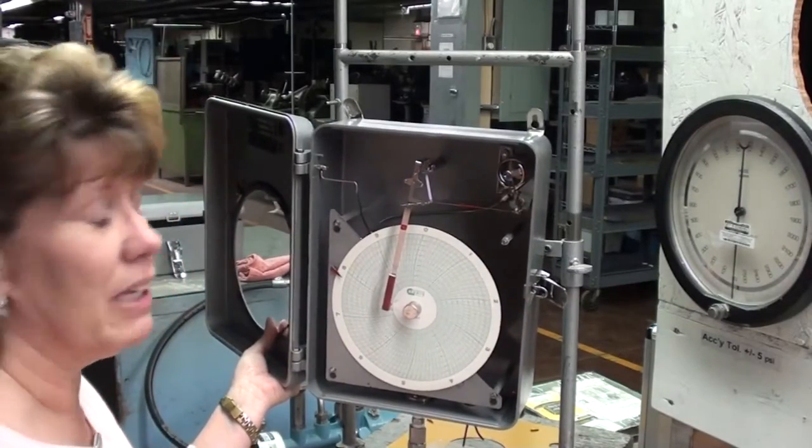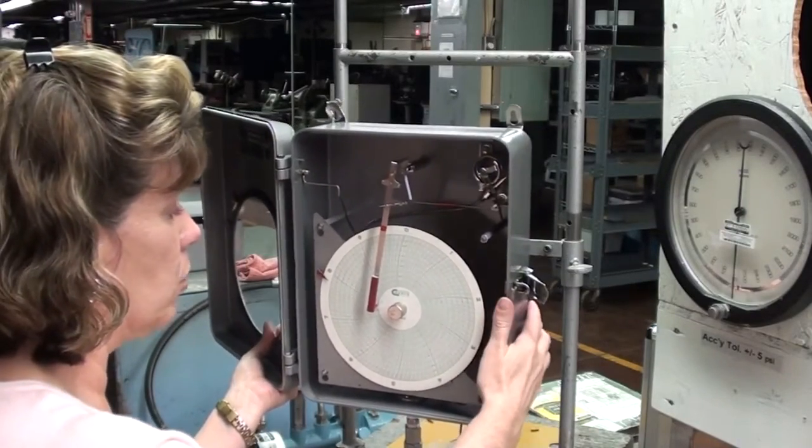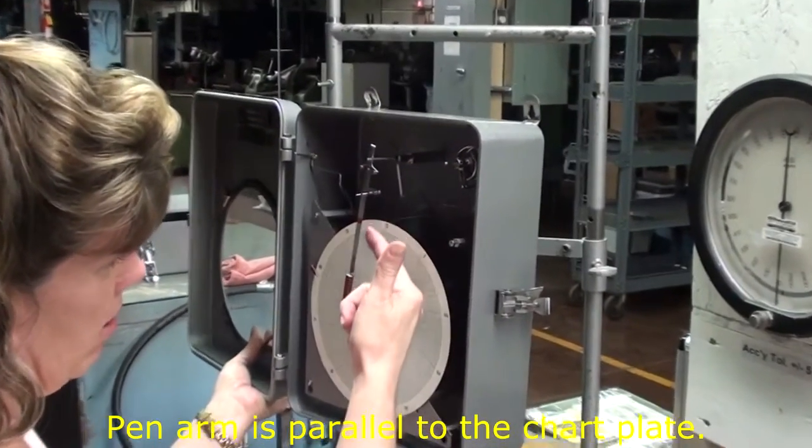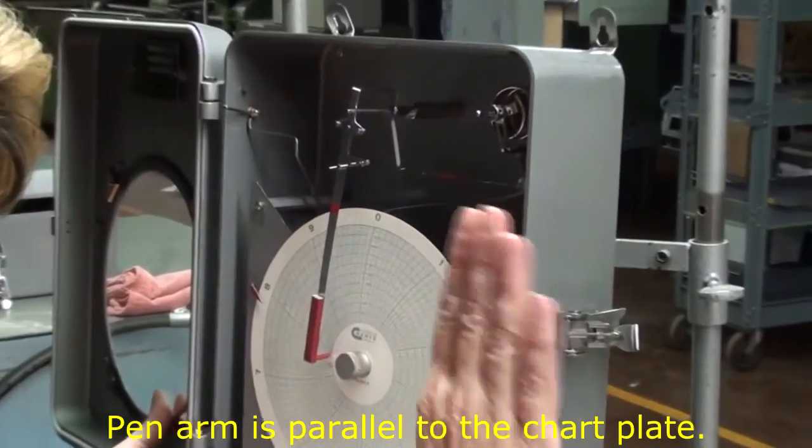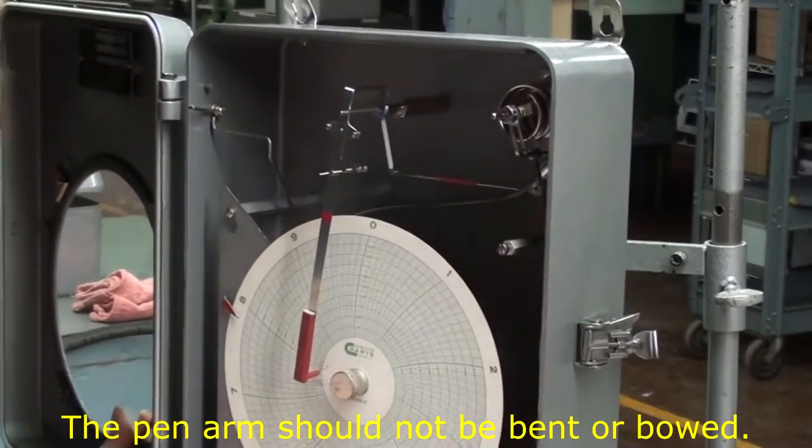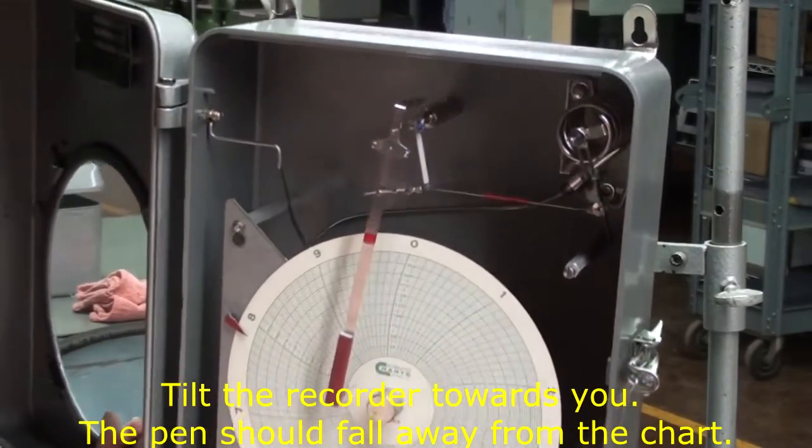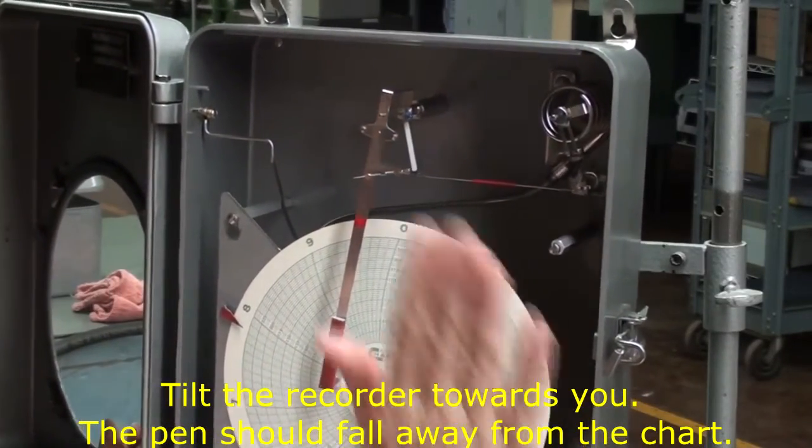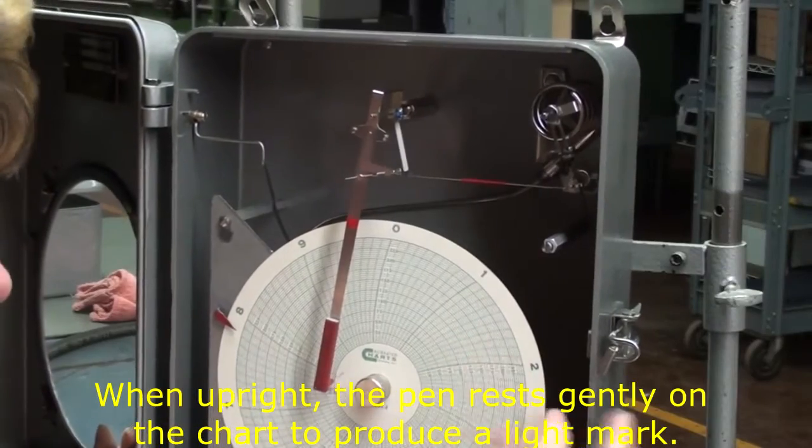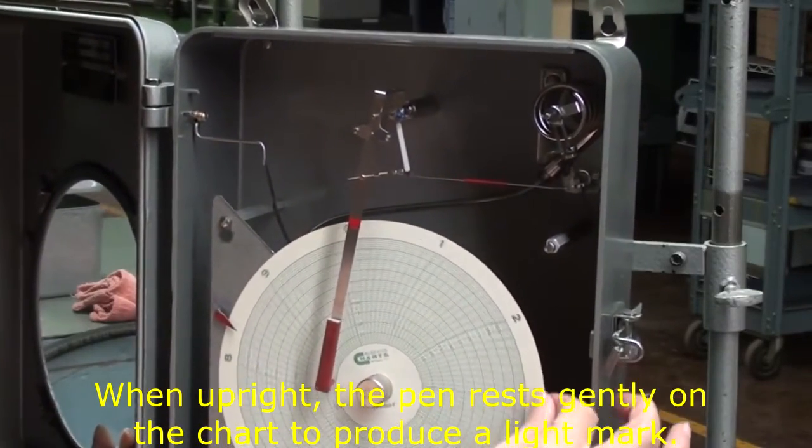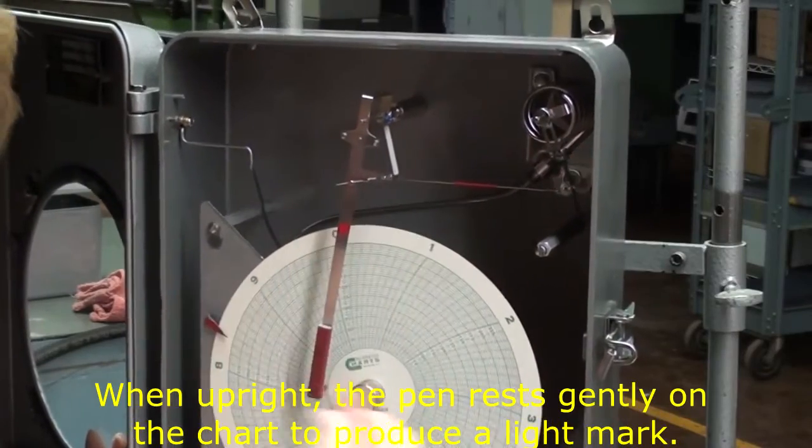Okay, we now have the pin tension correct. And if you will notice, the pin arm itself is parallel to the chart plate. We've not bowed it, put a hump in it or anything. And then if you tilt the recorder forward, the pin gently falls off the chart. But when you put the recorder back upright, the pin then sets back on the chart and marks. And you don't want a real heavy mark. You want a gentle, light mark.